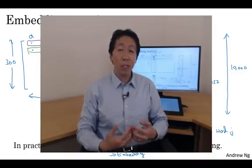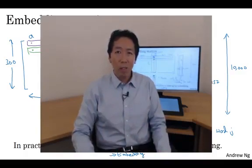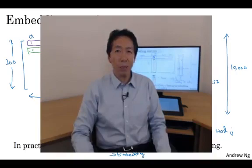So in this video, you saw the notation we'll use to describe the algorithms for learning these embeddings. And the key terminology is this matrix capital E, which would contain all the embeddings for the words of your vocabulary. In the next video, we'll start to talk about specific algorithms for learning this matrix E. Let's go on to the next video.